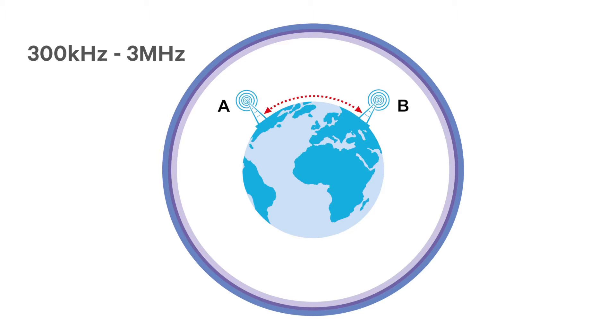For example, in lower shortwave, which is around 300 kilohertz to 3 megahertz, the radio wave can actually curve itself around the horizon, around the curvature of the Earth. It's a ground wave.